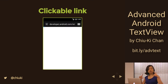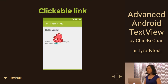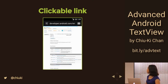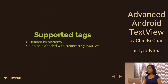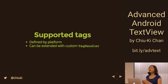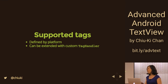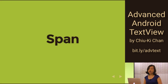There's a limited set of HTML tags supported by Html.fromHtml(), defined by the platform, and it may differ between Android versions. You can code to the lowest common denominator or extend it with a custom tag handler. But before explaining custom tag handlers, we need to understand spans.